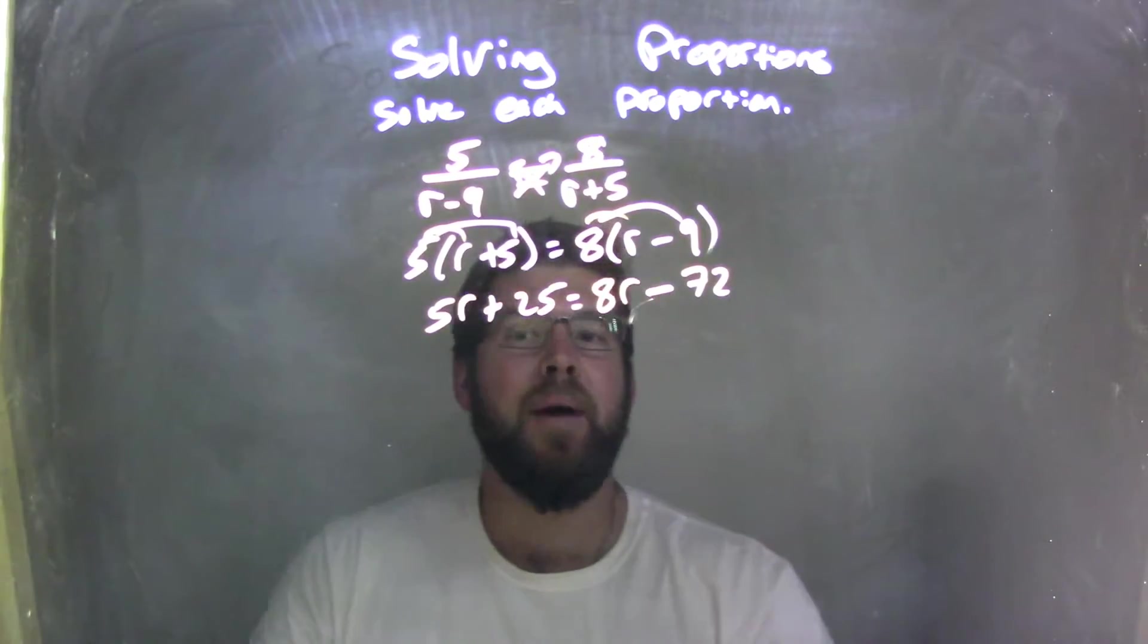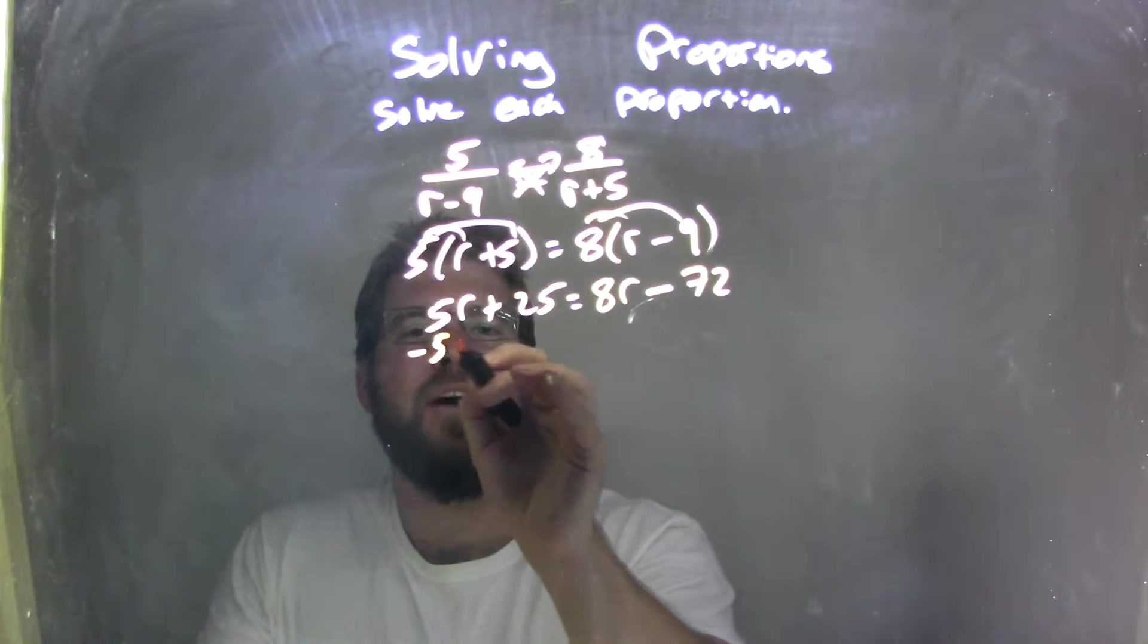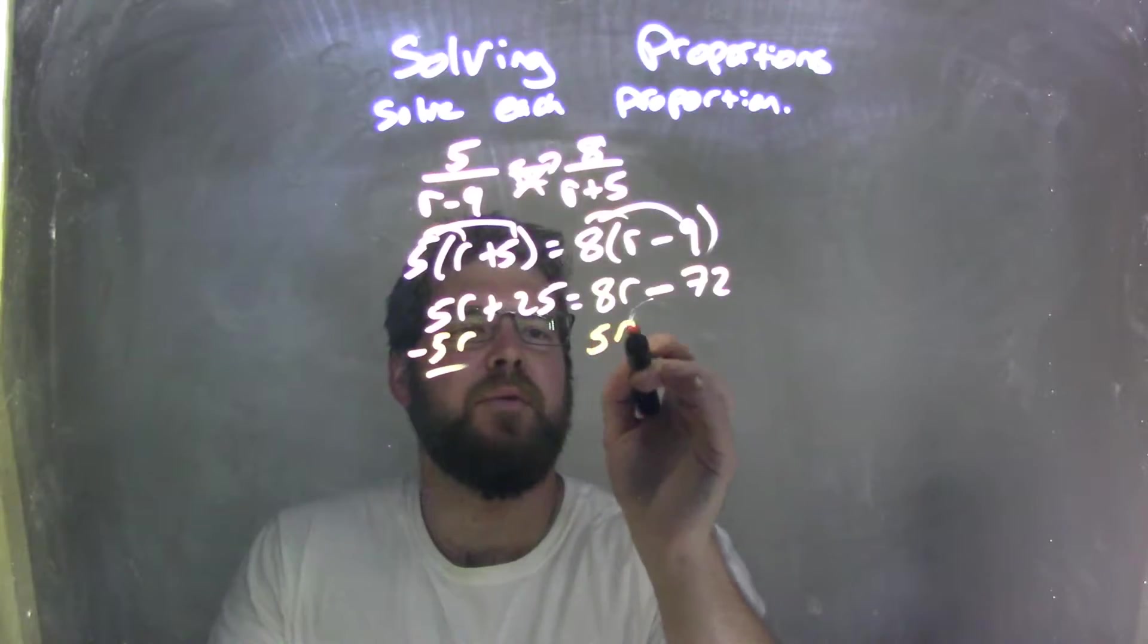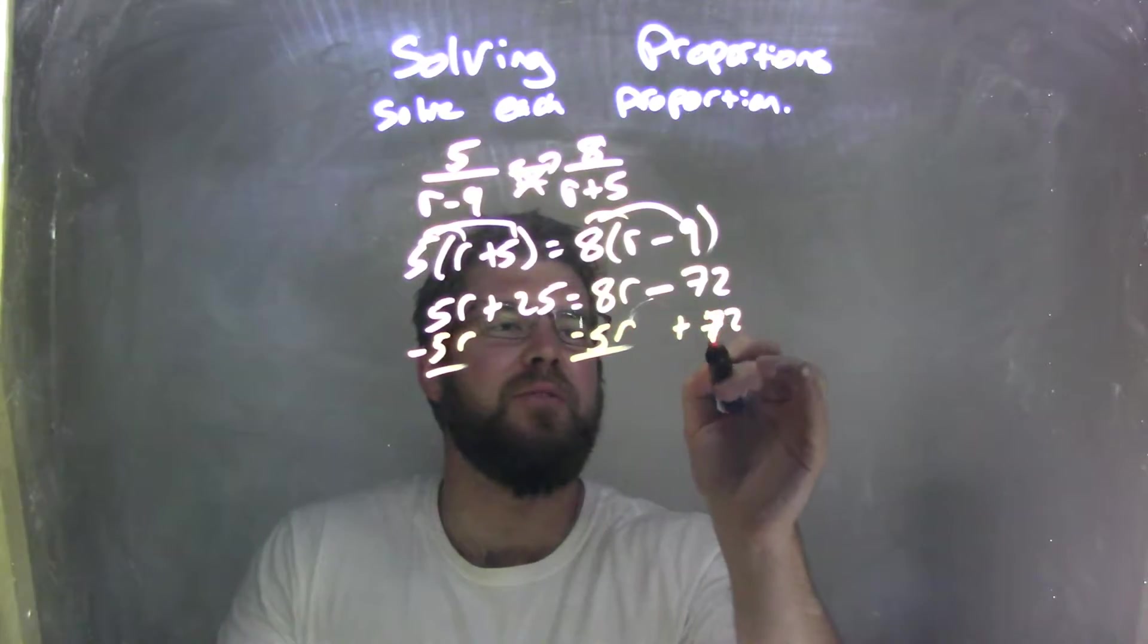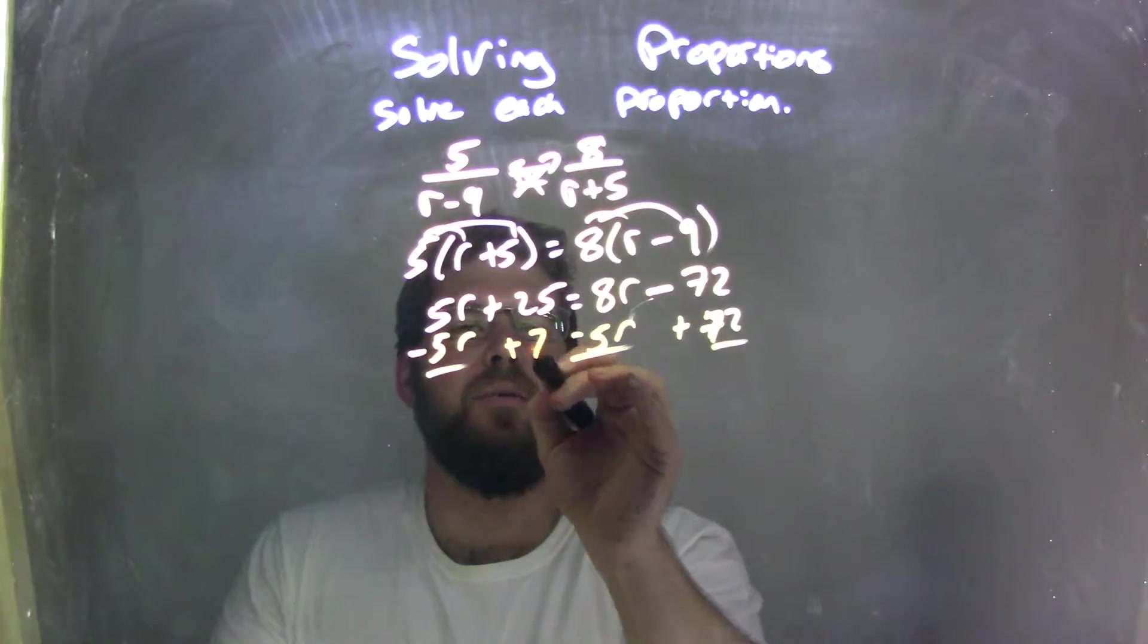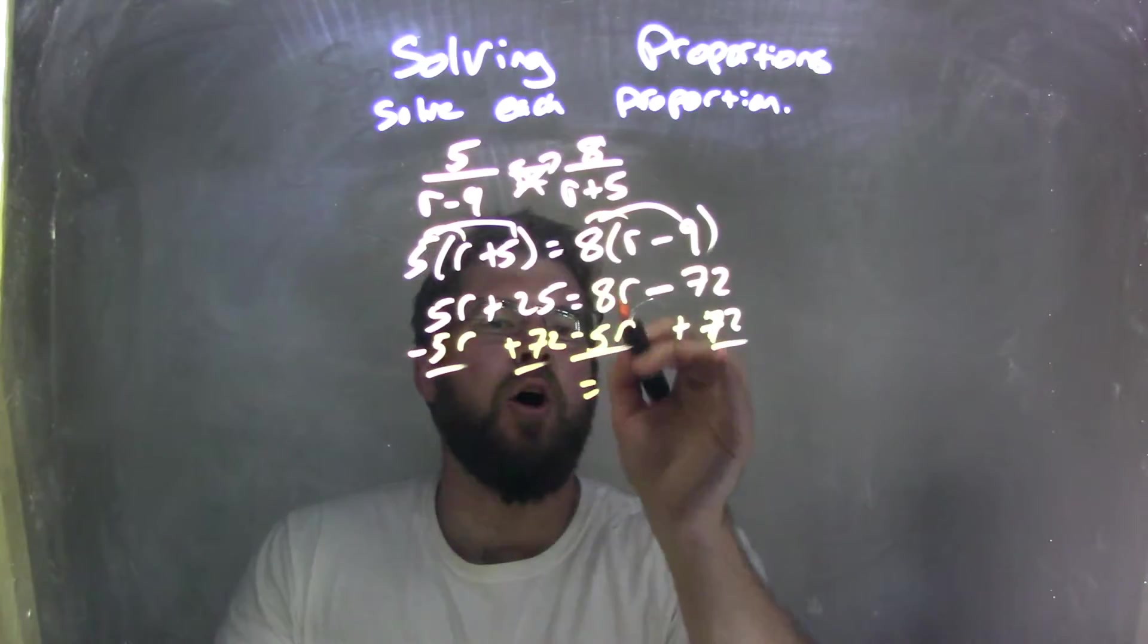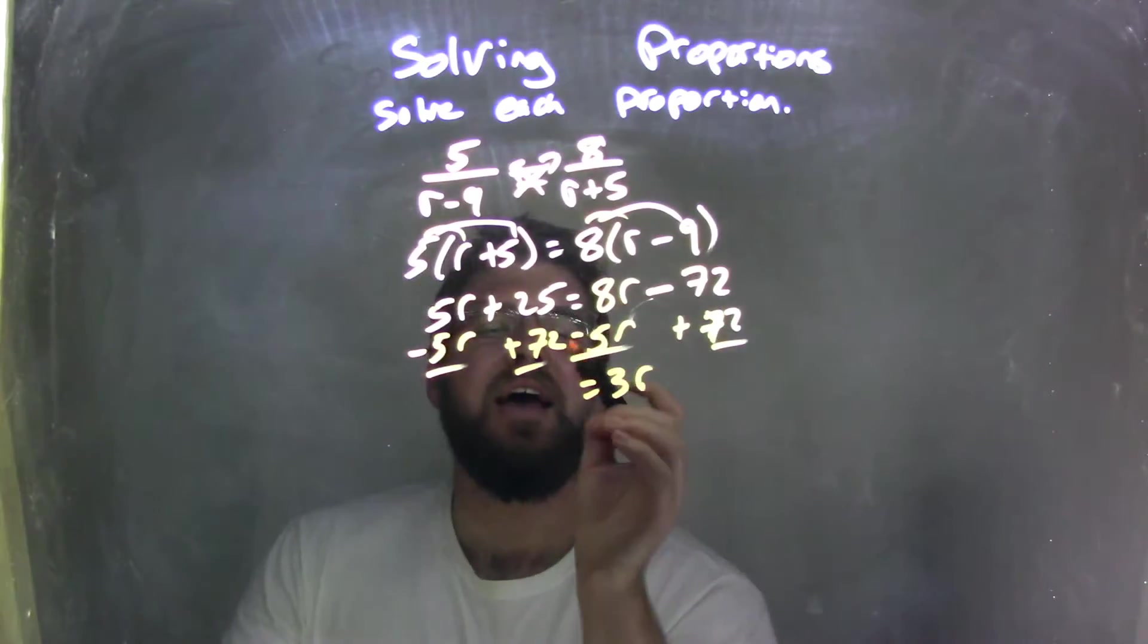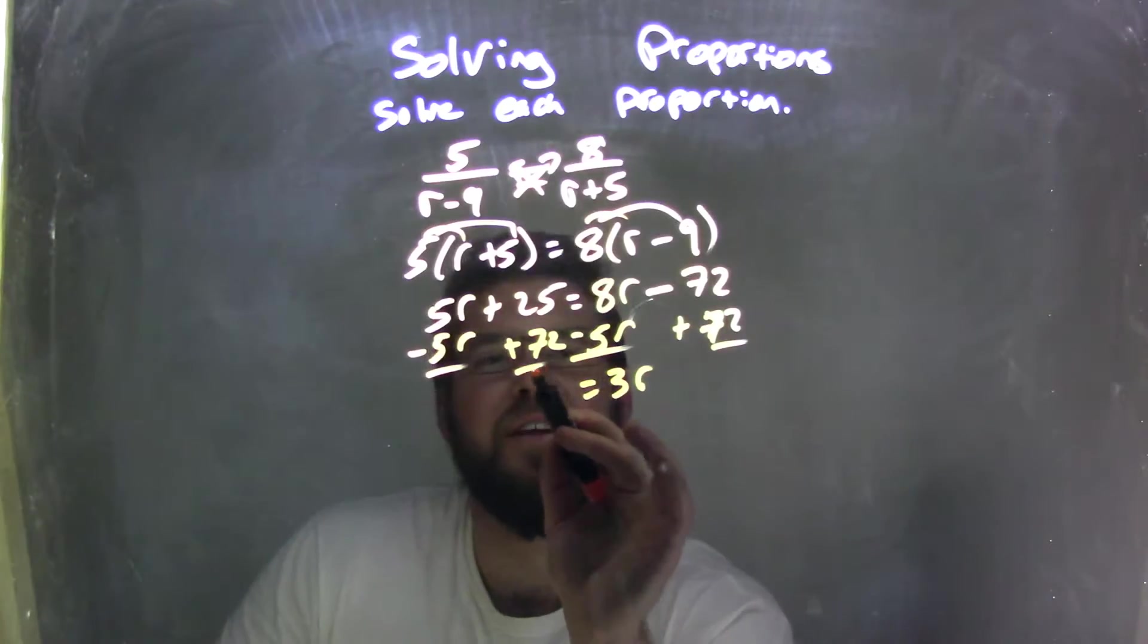So let's go combine our like terms here. I'm going to subtract 5r from both sides, and I'm going to add 72 to both sides as well. So 8r minus 5r is 3r.